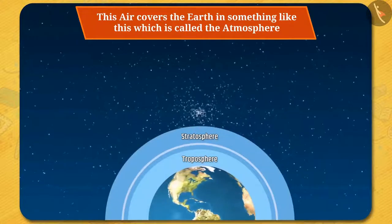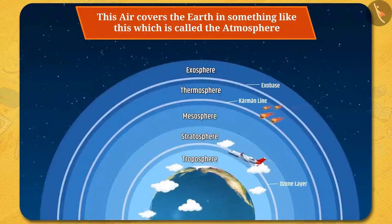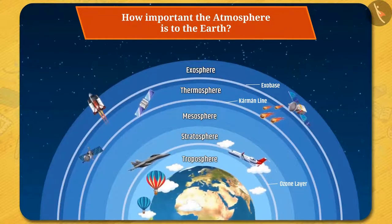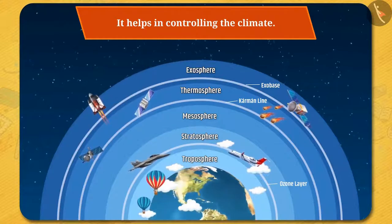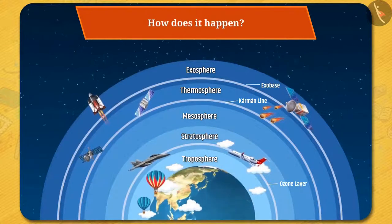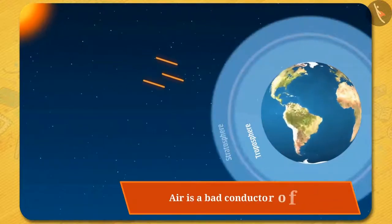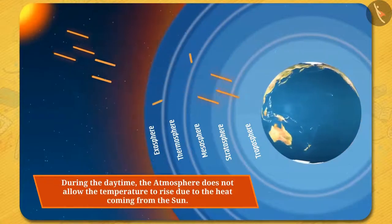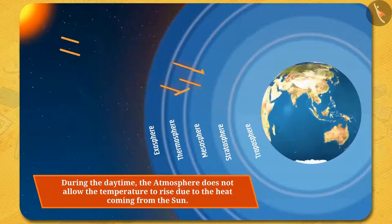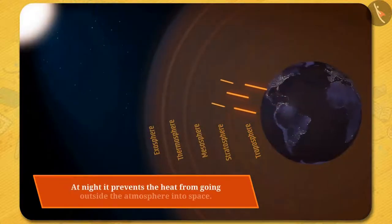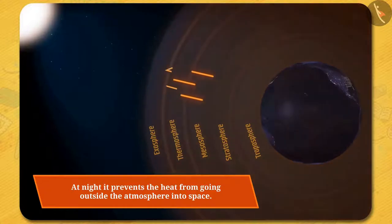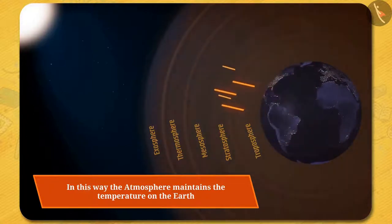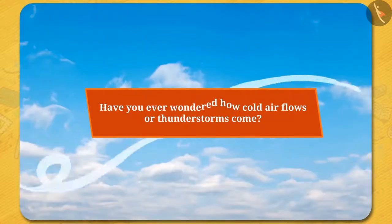This air covers the earth in something like this, which is called the atmosphere. Do you know how important the atmosphere is to the earth? It helps in controlling the climate. You know that air is a bad conductor of heat, so during the daytime, due to the heat coming from the Sun, the atmosphere does not allow the temperature to rise. And at night, it prevents the heat from going outside the atmosphere into space. In this way, the atmosphere maintains the temperature on the earth.